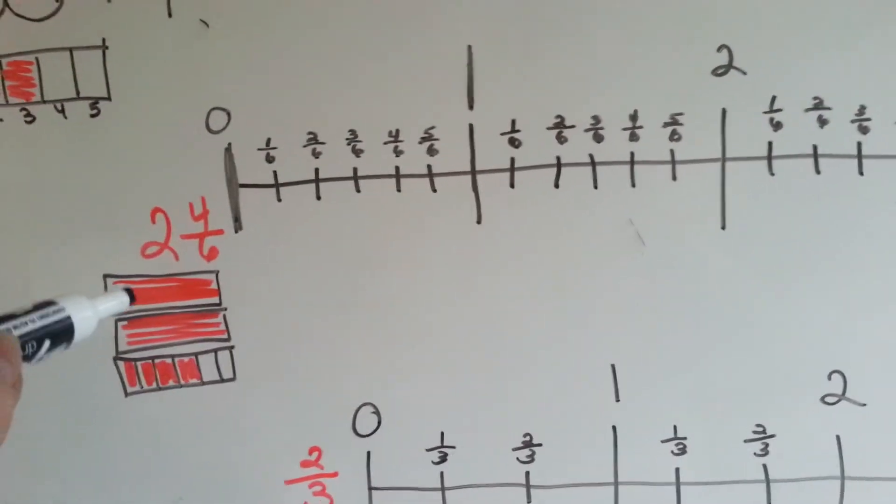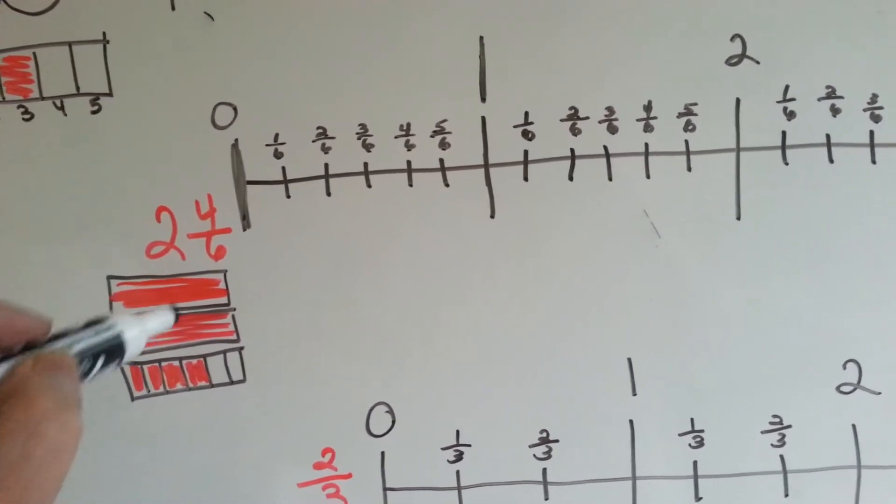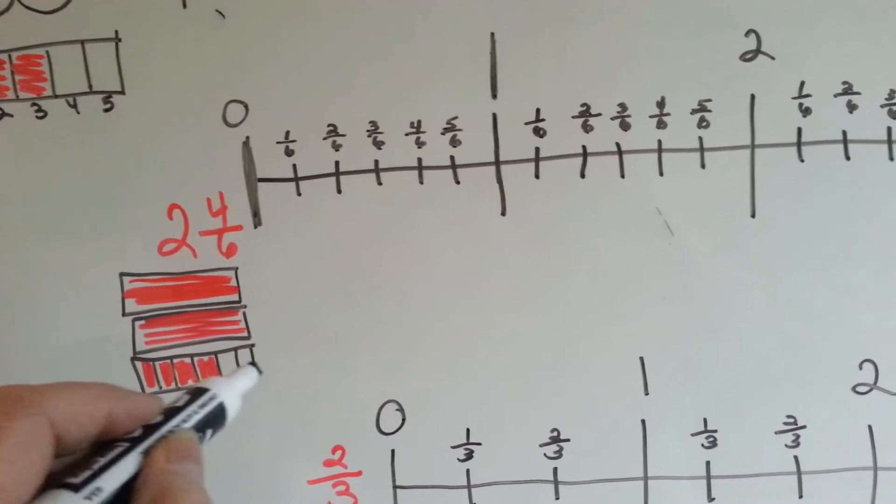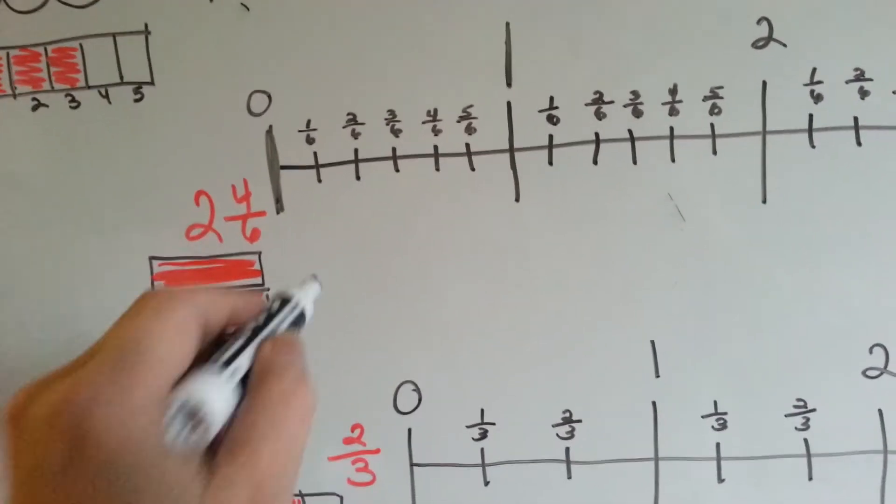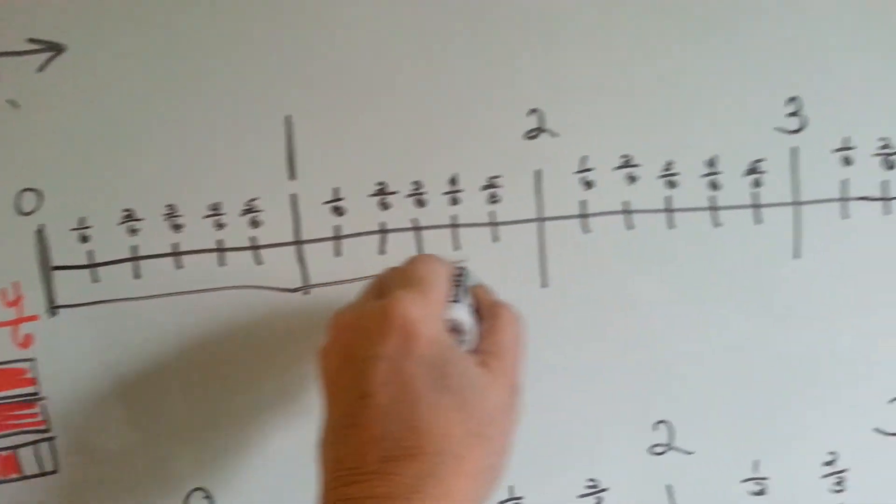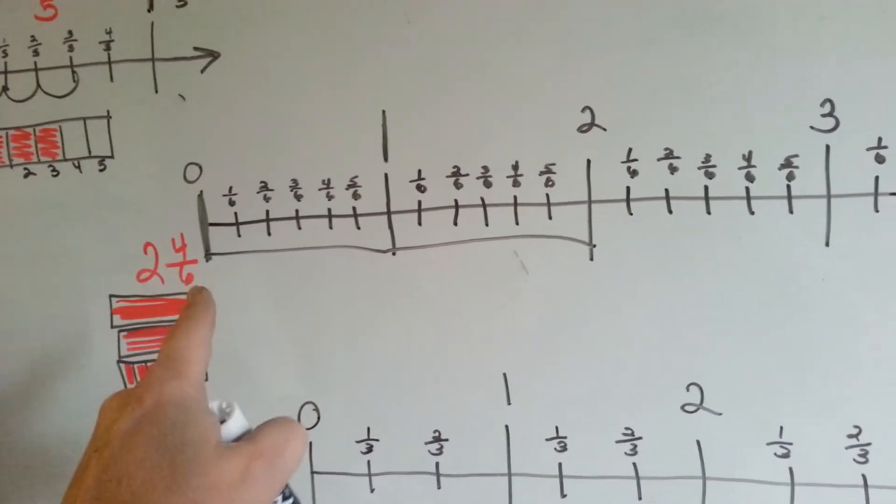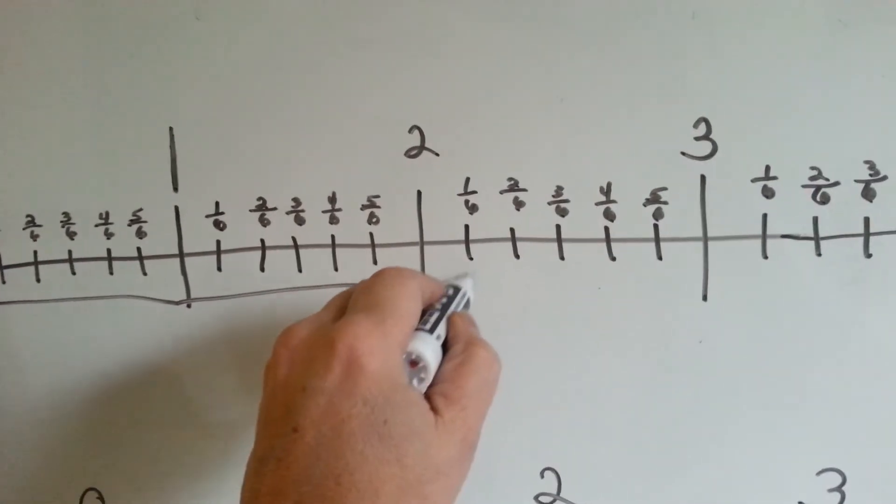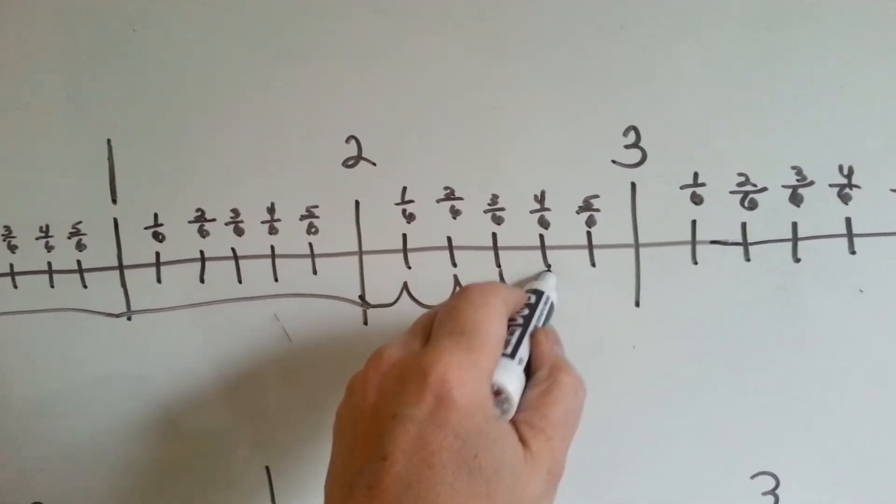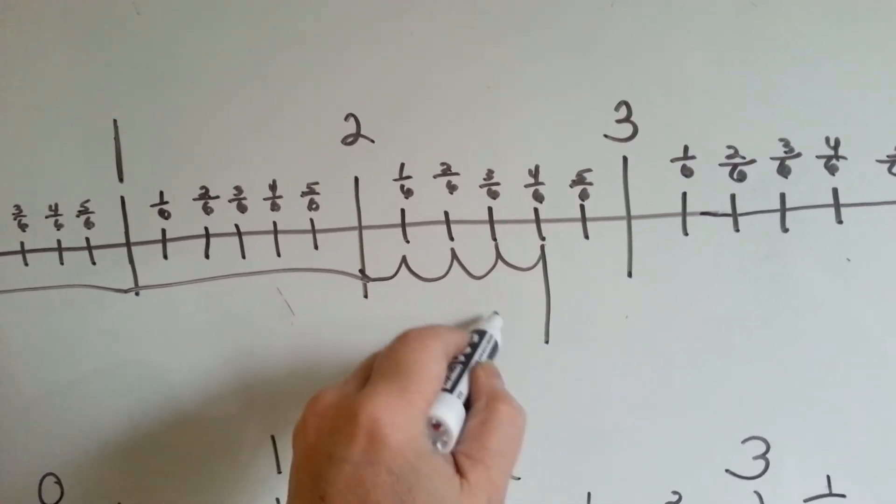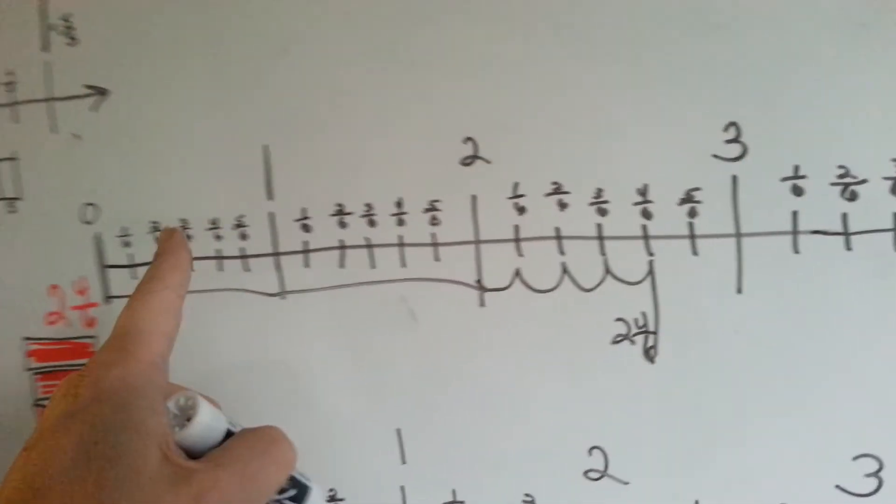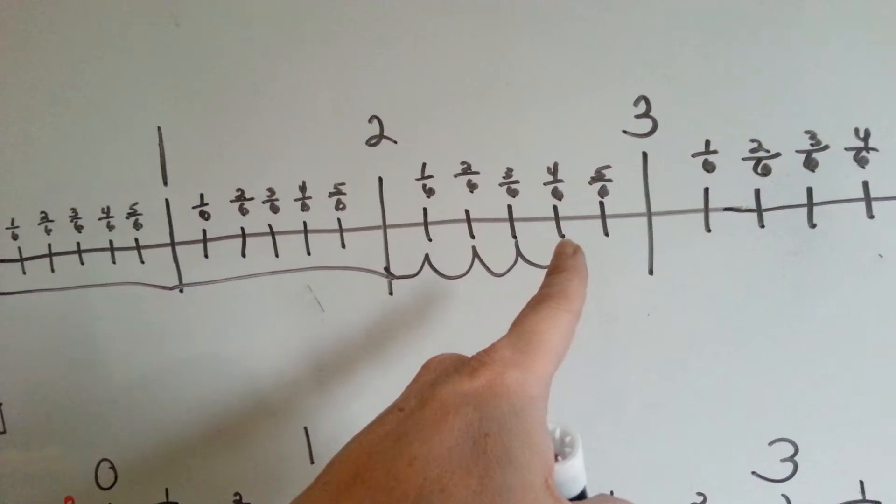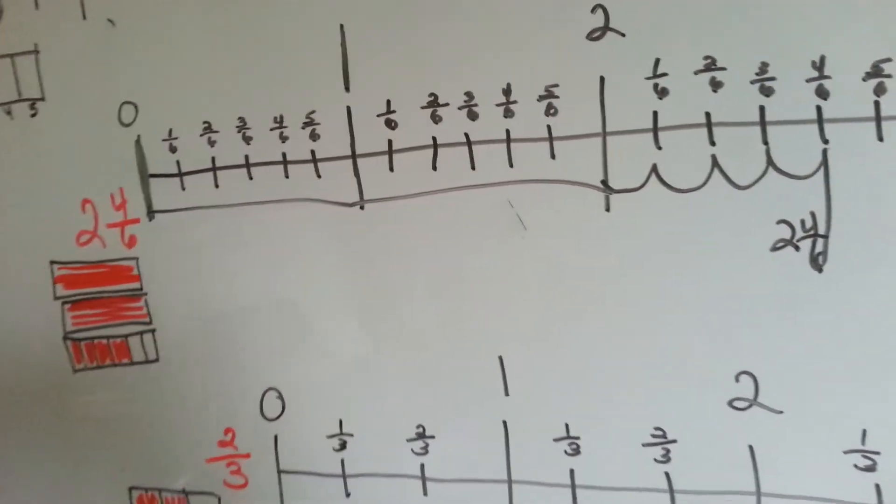Two and four-sixths. That would be like having two whole ones, and then the last one is split into six parts, and you've got four of those parts, two and four-sixths. We need two whole ones first, one, two, and now we need four-sixths. One, two, three, four. This would be two and four-sixths right here. So we have a whole number, and then the fraction with it, two and four-sixths.